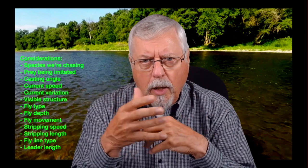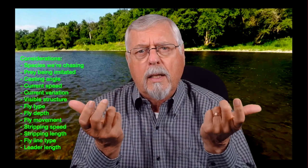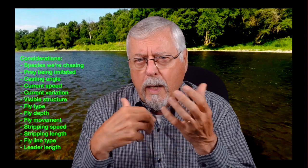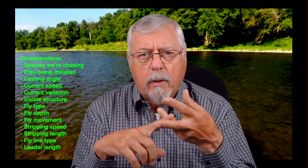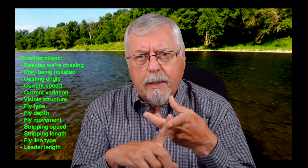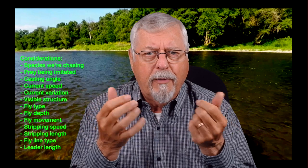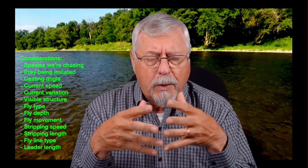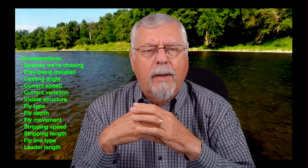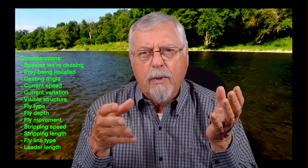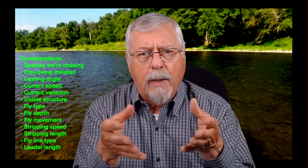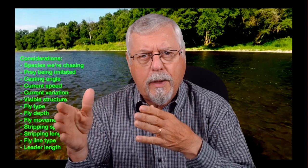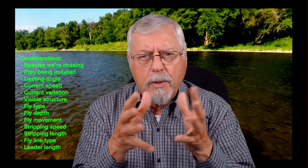I've got a list here we're going to go through, and I'll show some examples. The top two things are: what species are we chasing, because that dictates the differences, and what kind of prey are we trying to imitate. Are we looking at minnows, crayfish, leeches, or maybe a large insect that swims well, like a hellgrammite? We can call those nymphs, but you can present them like streamers as well. Then underneath that, we've got casting angle and current speed — how fast is the current moving, are we going 90 degrees upstream, 135 degrees, or 45 degrees downstream? Current speed and where the current changes — fast here, slow over there — those sorts of things become quite critical.